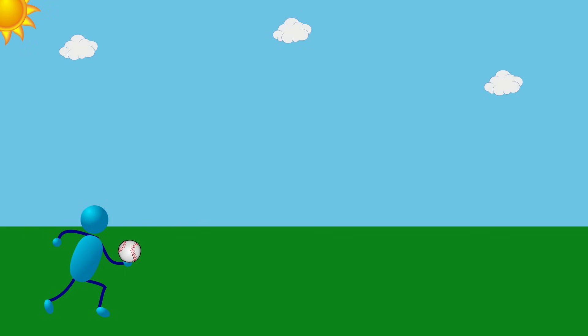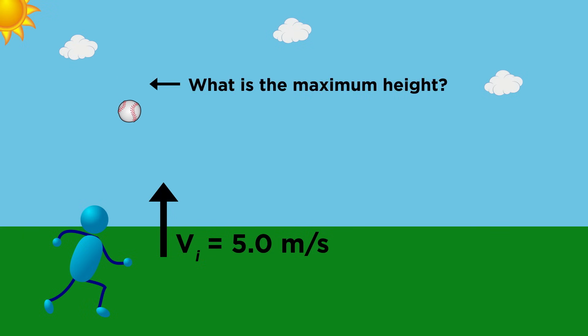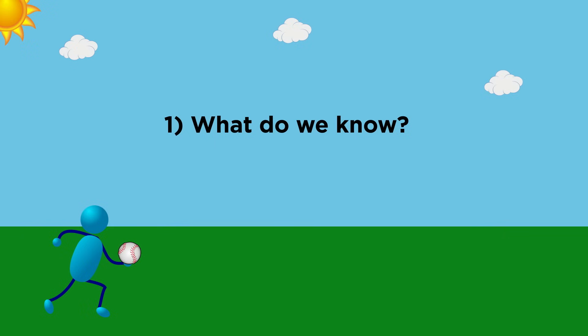Let's give one a shot. Say you toss a ball directly upward with an initial velocity of five meters per second. What will be the maximum height of the ball? Now, as we discussed, let's first decide what we know.